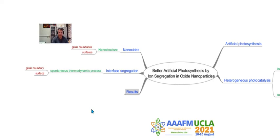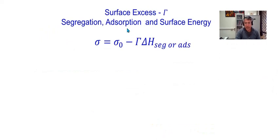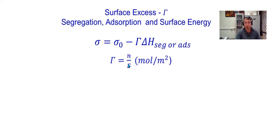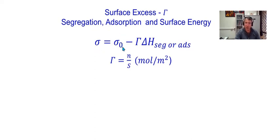What is interface segregation in a solid? Segregation, adsorption, and surface energy are strictly related to the surface excess. The surface excess is expressed in number of moles per square meter of surface. When you have a surface excess and a width of segregation or adsorption, the system reacts with a decrease of surface energy and stabilization. The surface energy of the pure material is decreased by the amount of atoms at the surface via segregation or adsorption.